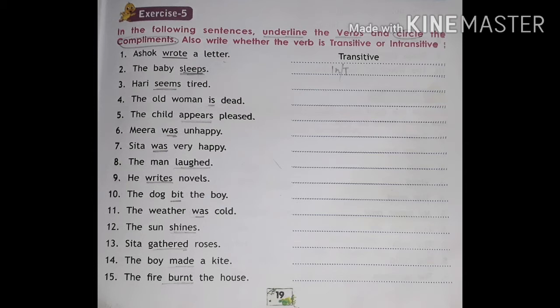Number seven: Sita was happy. Underline 'was' and 'very happy' is the complement — circle 'very happy'. Number eight: the man laughed. Underline 'laughed' — it is a transitive verb and there is no complement. Number nine: he writes novels. Underline 'writes' and 'novels' is the object — circle it. It is an intransitive verb.